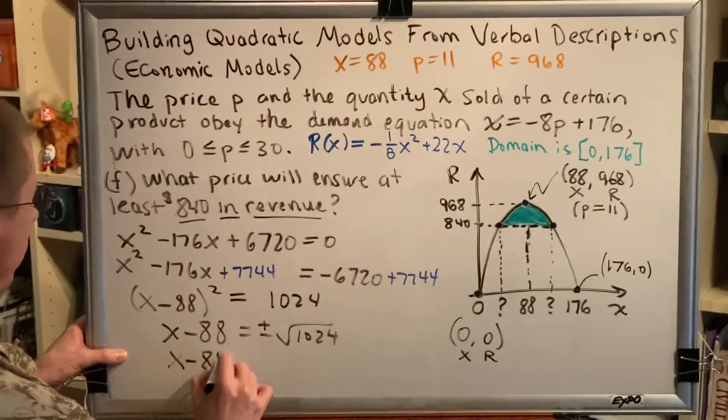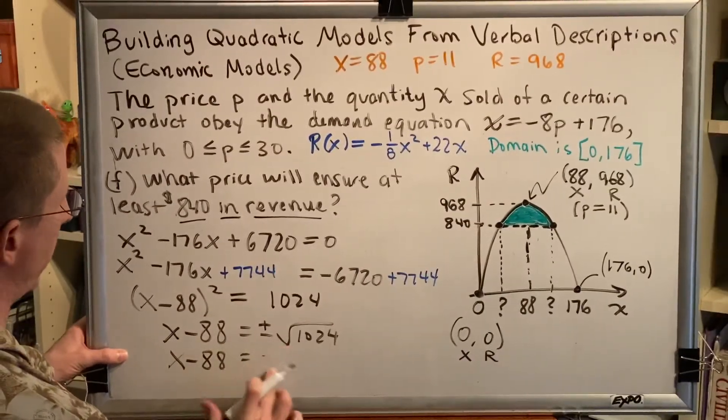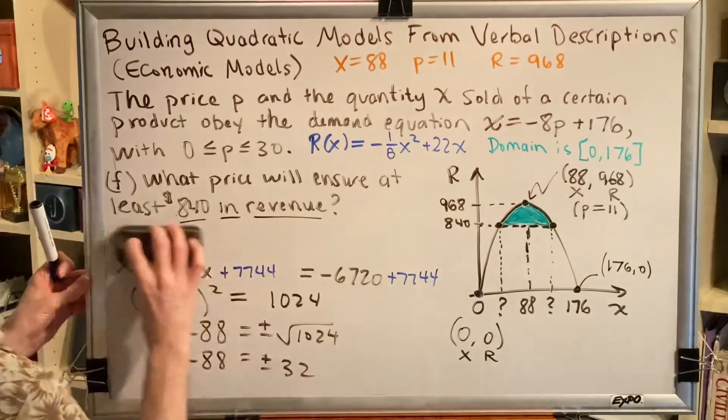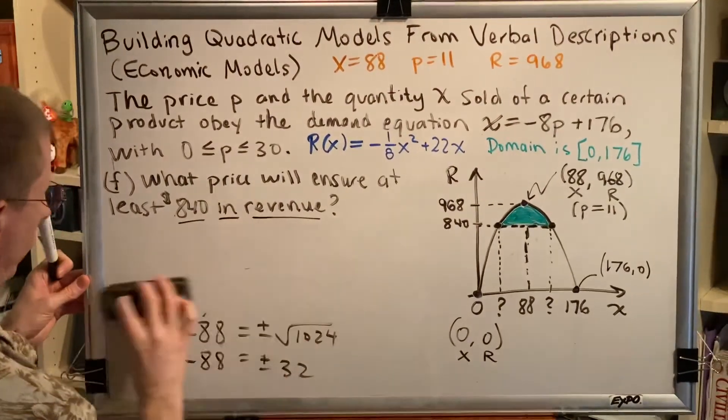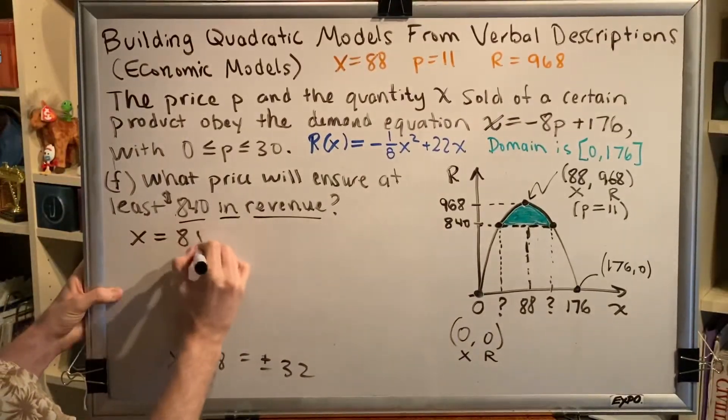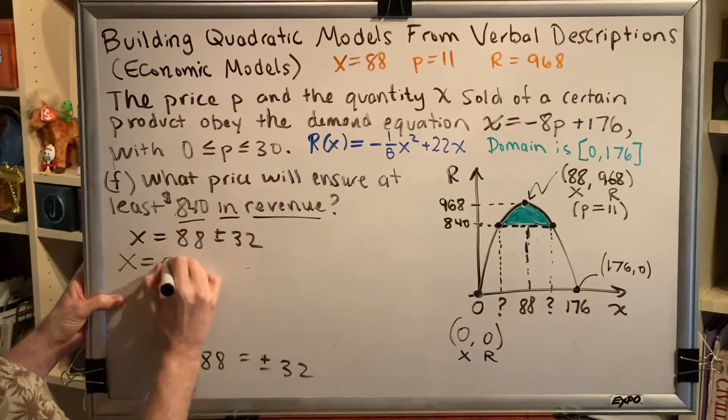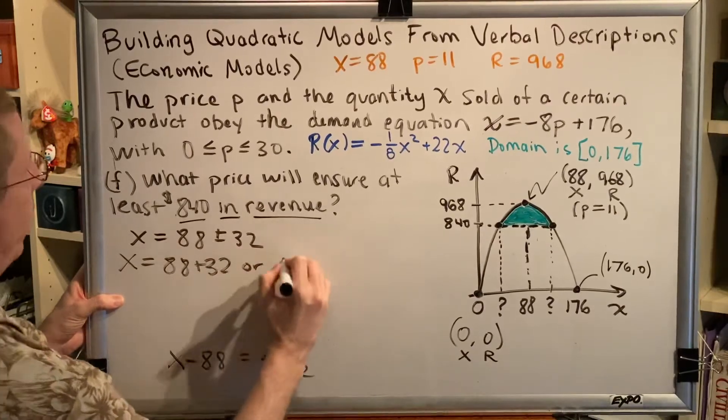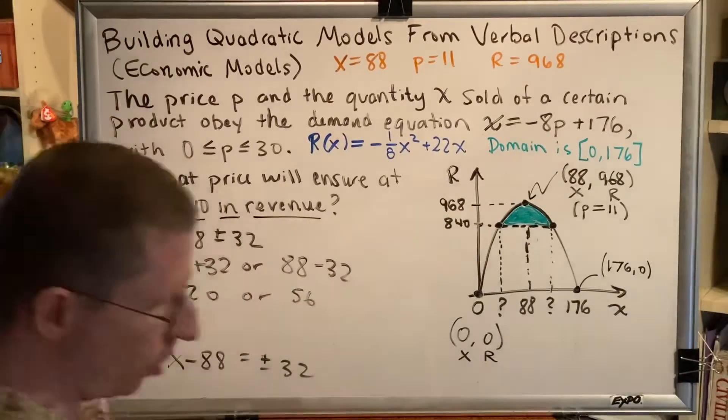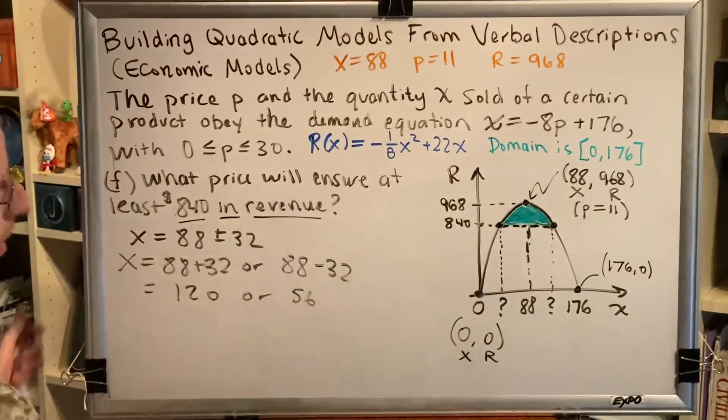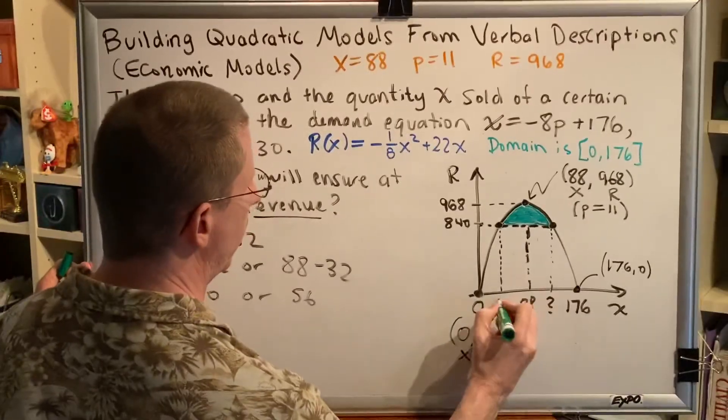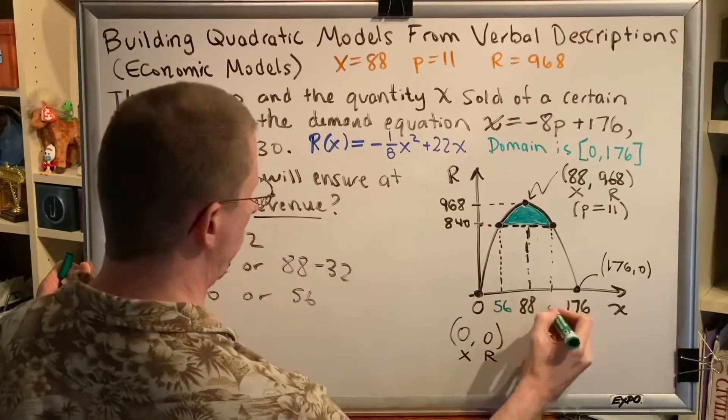So we get x - 88 = ±32. Which means there are actually going to be two values here. So when we move the subtract 88 to the other side, we get x = 88 ± 32. x = 88 + 32 or 88 - 32. So we get 120 or 56. These are the two possible values of x that will bring in the revenue indicated. These are the two question marks that I had located on our diagram. We can now fill those in. So 56 or 120.